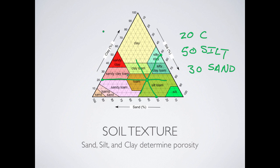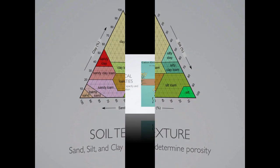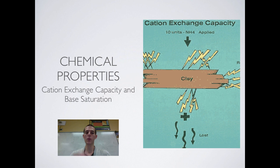You also need to know that soil texture determines porosity. Sand is highly porous — water flows through it very easily. Clay is not porous at all — water doesn't flow through it. A couple of things to wrap up on today: you need to know about the chemical properties of soil, and there are two terms you need to know — cation exchange capacity and base saturation.